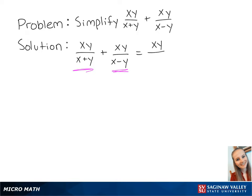So we're going to start with multiplying xy over x plus y by x minus y over x minus y. Then we're going to multiply xy over x minus y by x plus y over x plus y.